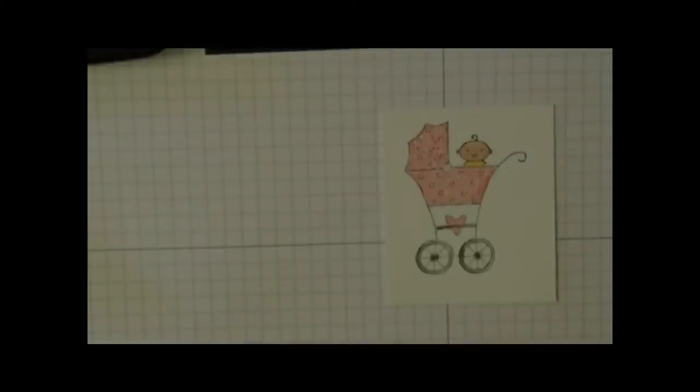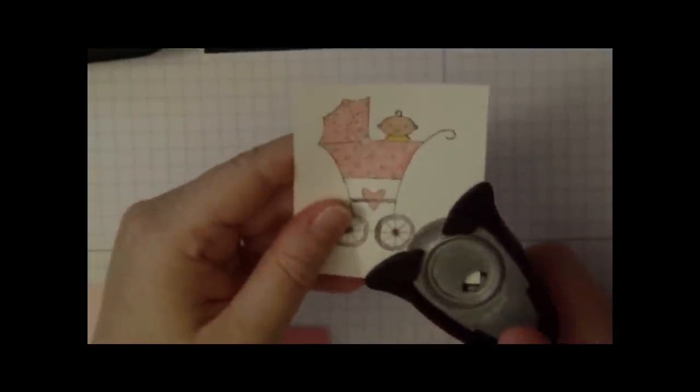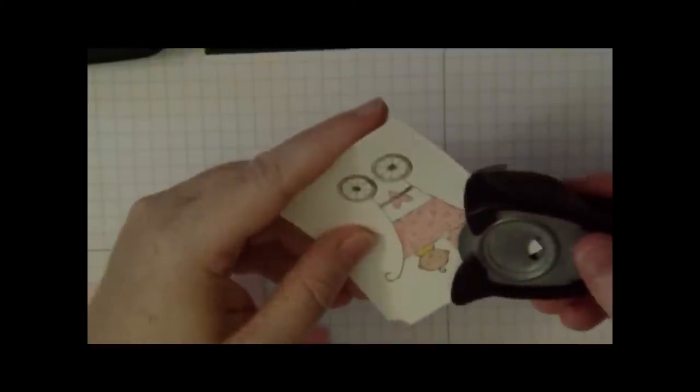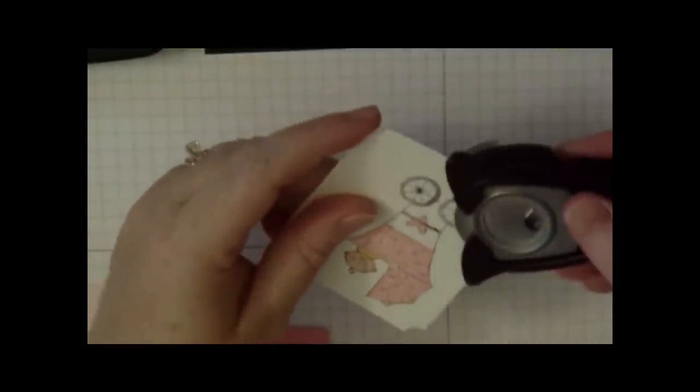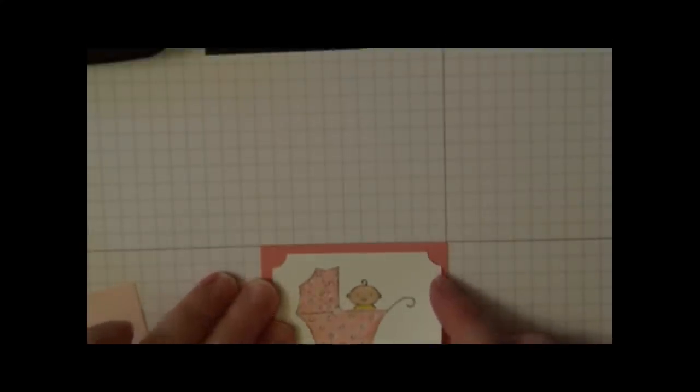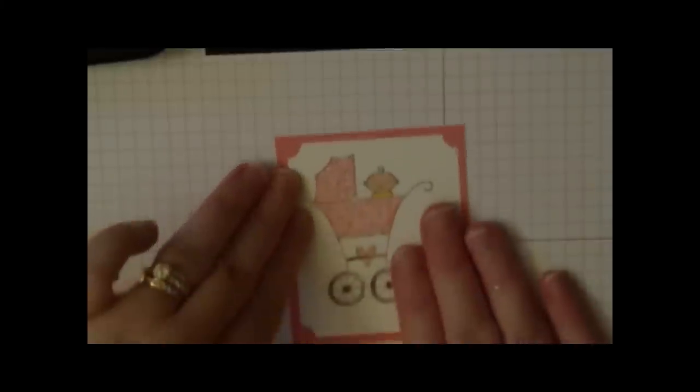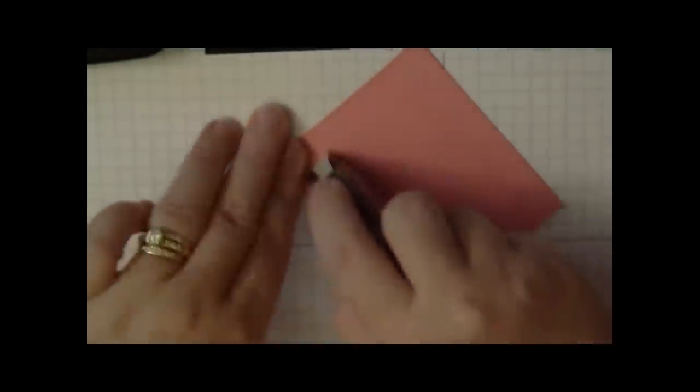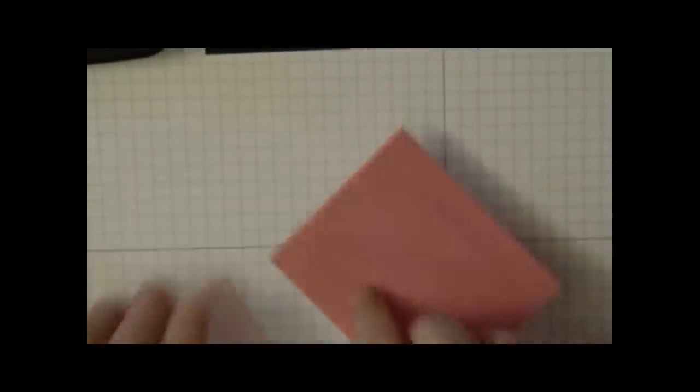So the next step is to layer all the pieces together. And we're going to tick it corner punch the corners of the little baby carriage. Now we're going to adhere everything together. This piece goes on to the Regal Rose piece. Move it up here so you can see it. And this piece goes on to the Pink Pirouette piece.